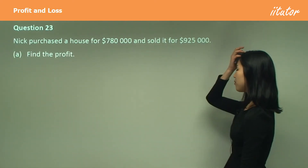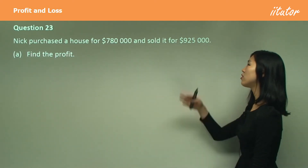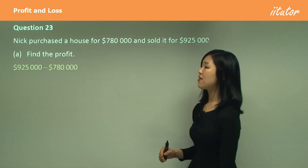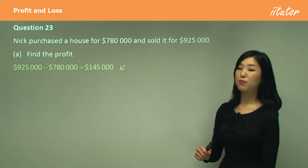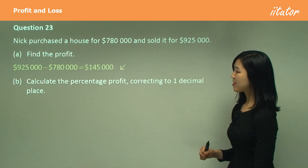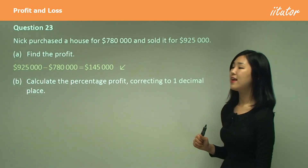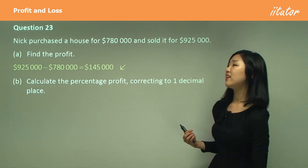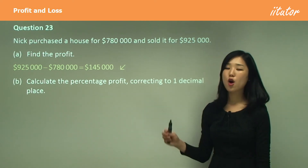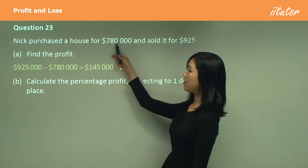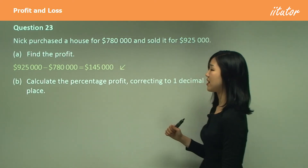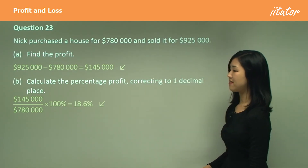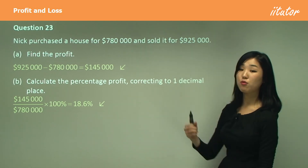Nick purchased a house for $780,000 and sold it for a higher amount, so we're making a profit. Find the difference — selling price minus cost price — for your profit. To calculate the percentage profit: when they say percentage profit without specifying, we put it over the original price, which is $780,000. Put the profit over $780,000 and multiply by 100 to get the percentage profit, corrected to one decimal place.